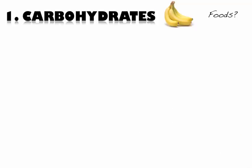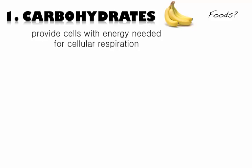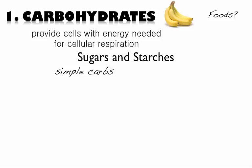We started with carbs. The main carb foods are sugars and starches — fruit, for example, is a sugar. Carbs' main purpose is to provide cells with the energy needed for cellular respiration. Glucose is the main sugar burned in cellular respiration, the process in which cells make energy from glucose. Sugars are simple carbs and starches are complex carbs.